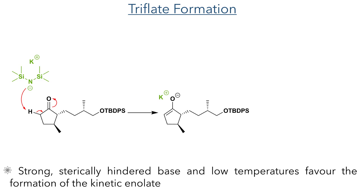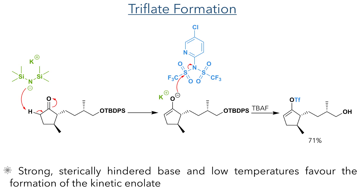Taking this compound forward, it was reacted with potassium HMDS at minus 78 degrees. This combination of a strong base and low temperatures favoured deprotonation at the less sterically hindered side of the ketone and the formation of the kinetic enolate. Comins' reagent was then added to install a triflate group and the TBDPS was removed using TBAF, generating the product in a 71% yield.